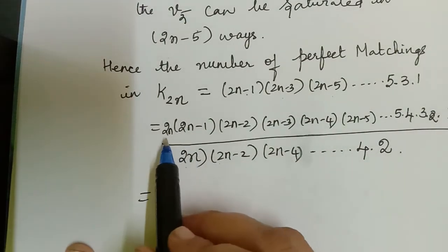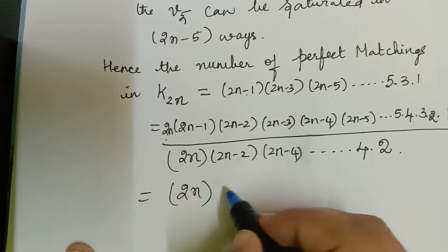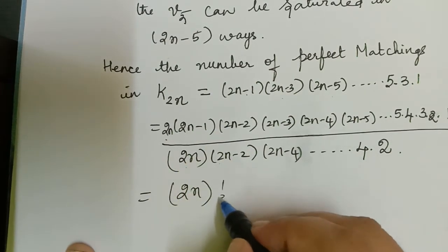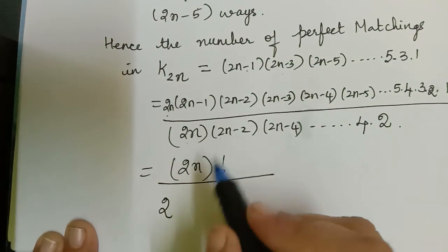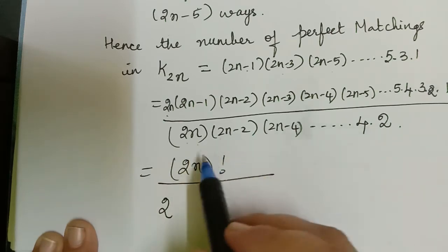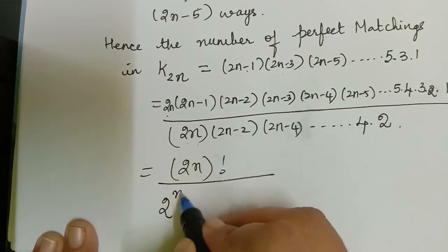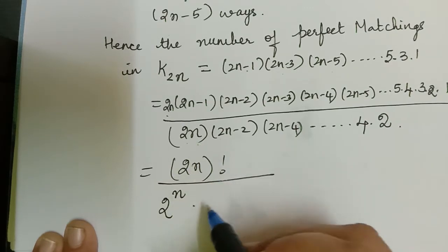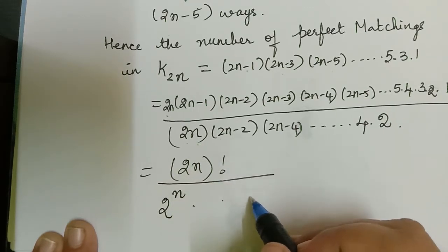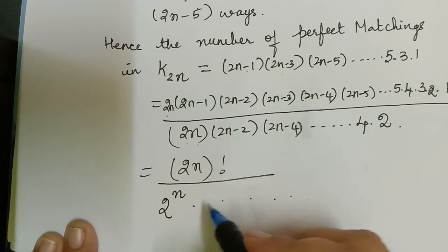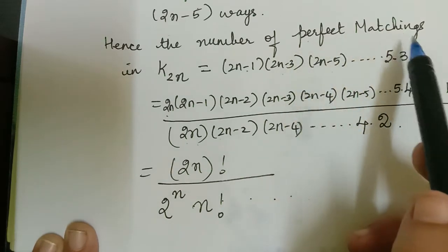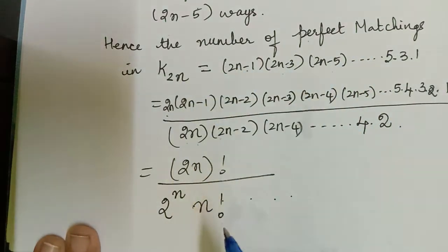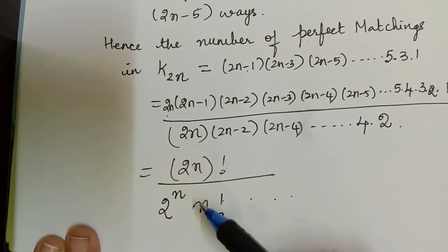The numerator is simply (2n)!. In the denominator, factoring out 2 from each of the n even terms gives 2ⁿ, and the remaining factors are n × (n−1) × (n−2) × ··· × 2 × 1, which is n!. Therefore, the number of perfect matchings in K₂ₙ equals (2n)! divided by (2ⁿ · n!).